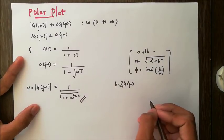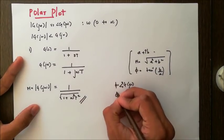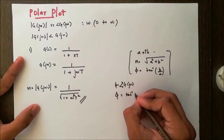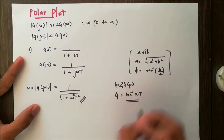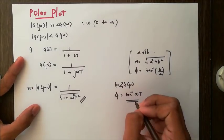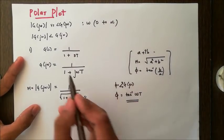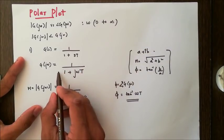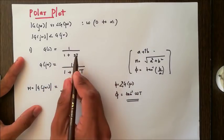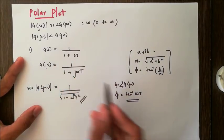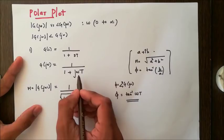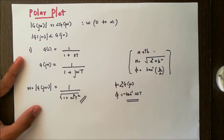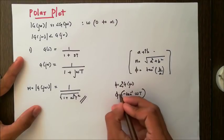Similarly, the phase angle φ is -tan⁻¹(ωT). You have to remember one thing: first check if the quantity is in the standard form, that is the (1 + sT) form. If it is in the denominator, put a negative sign. That is how we find out the phase angle.